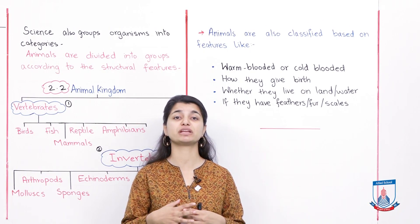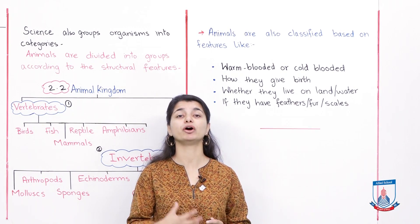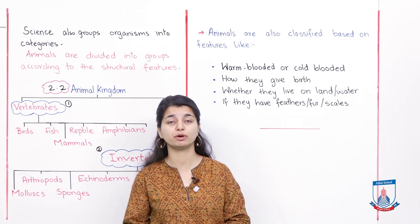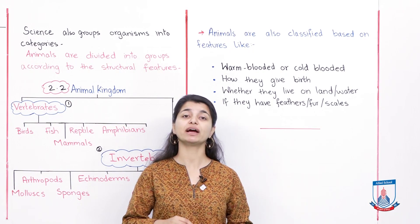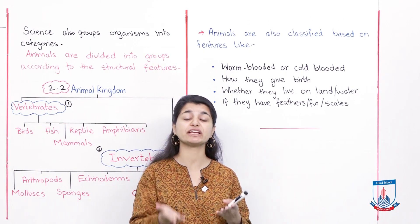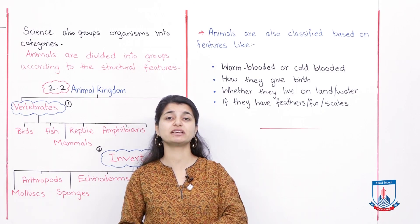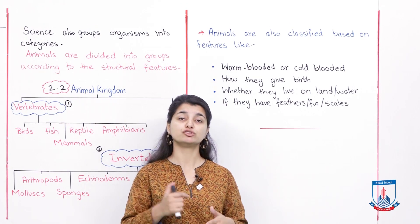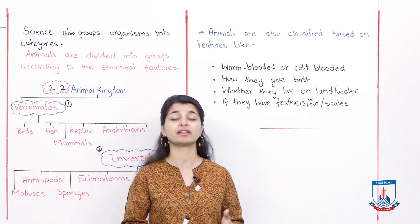Because our body is warm-blooded, we retain our temperature at the same level regardless of the environment. However, cold-blooded animals change their body temperature based on the environment. If a cold-blooded animal is in a cold place, their body temperature will be cold, and when it goes to a warm place, their body temperature will rise. So those whose temperature changes are cold-blooded, and those whose body temperature stays the same are warm-blooded animals.